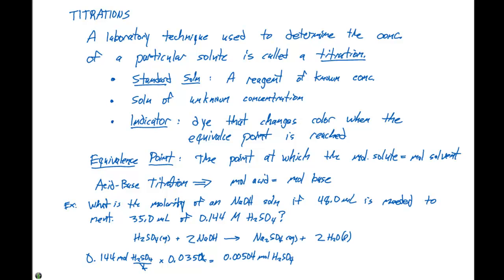We know from our balanced chemical reaction here that for every one mole of H2SO4, we have two moles of NaOH. And that comes from properly balancing the coefficients of our chemical equation. This is going to give us 0.01008 moles of NaOH.